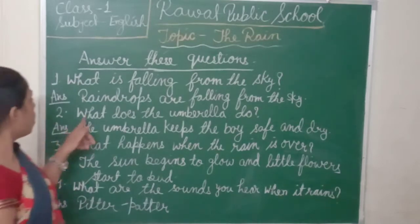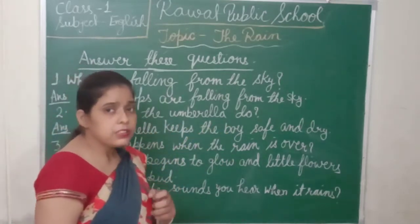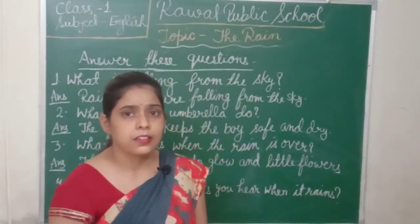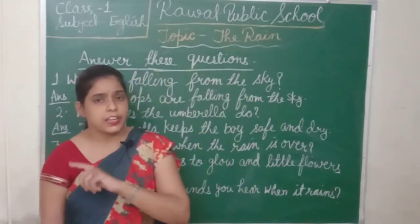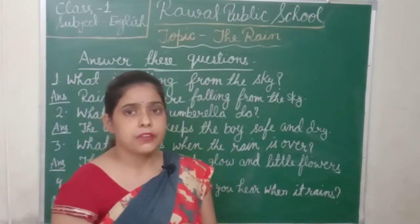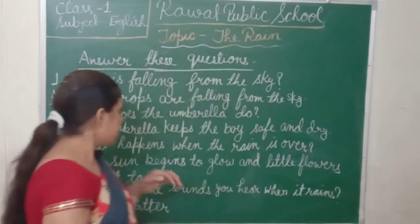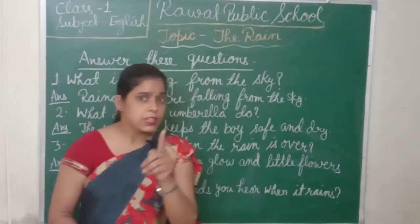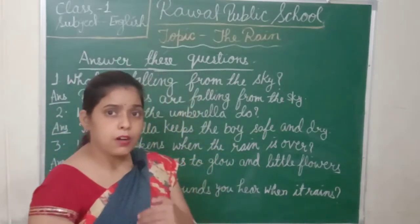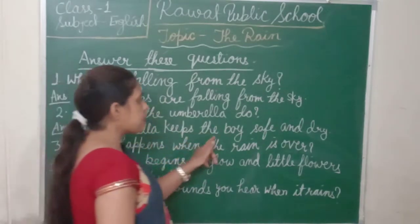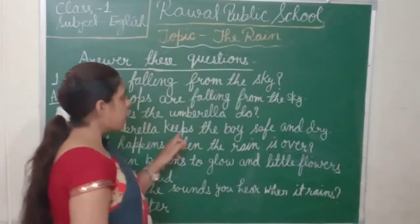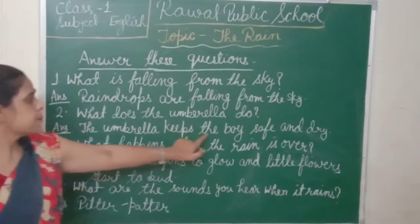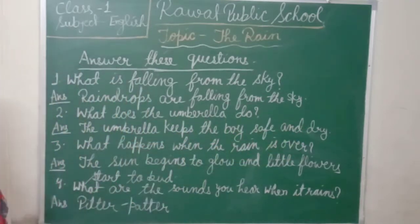Now question number two: What does the umbrella do? When it rains, what keeps us safe and dry? Umbrella and raincoat. In this poem there is a little boy who talks about rain. The umbrella keeps the boy safe and dry. So what does the umbrella do? The umbrella keeps the boy safe and dry.